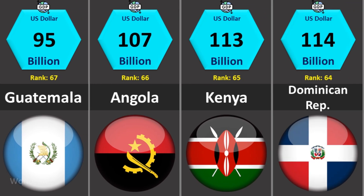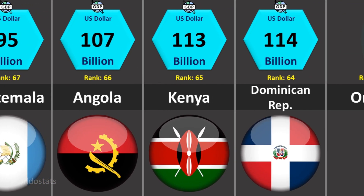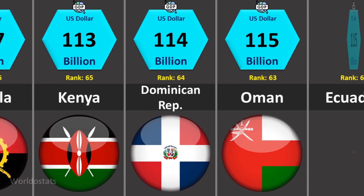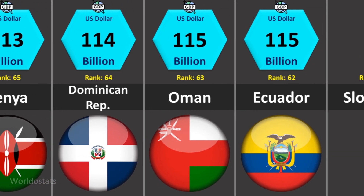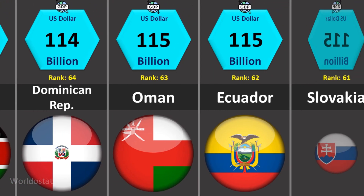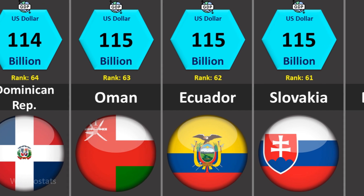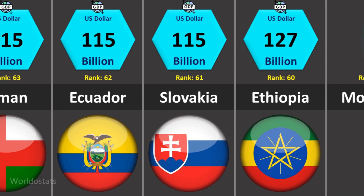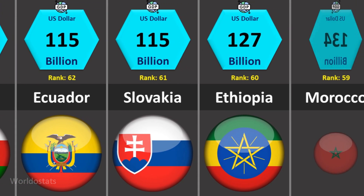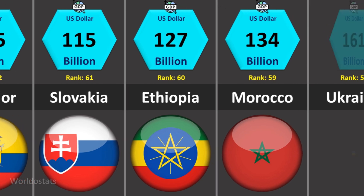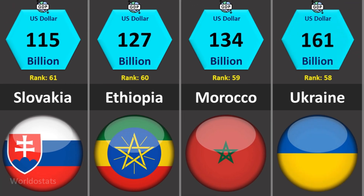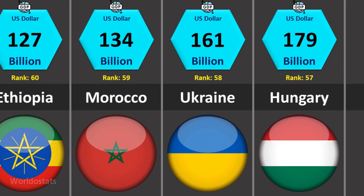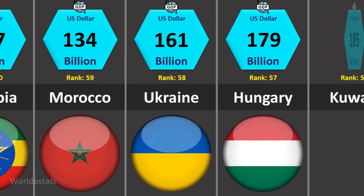This video will show the top 100 richest countries as ranked by their nominal GDP, starting from the 100th spot and moving all the way up to number one. The animation flows quickly, but what you'll see is the relative position of each country, giving you a clear sense of the global economic landscape.